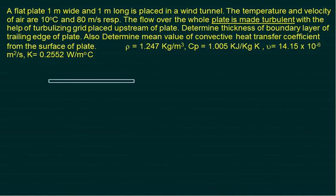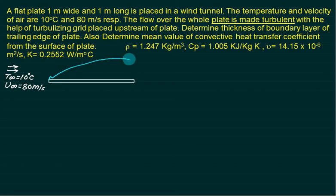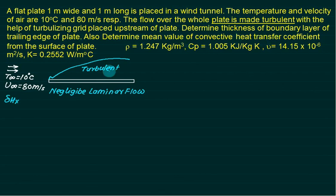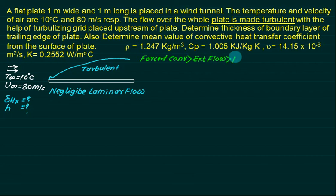Problem 2: A plate 1 m wide and 1 m long is placed in a wind tunnel. Air at T∞ = 10°C flows at u∞ = 80 m/s. The plate is tripped using a turbulizing grid, so the flow is modeled as fully turbulent. We want the hydrodynamic boundary layer thickness at the trailing edge and the mean heat transfer coefficient h̄.